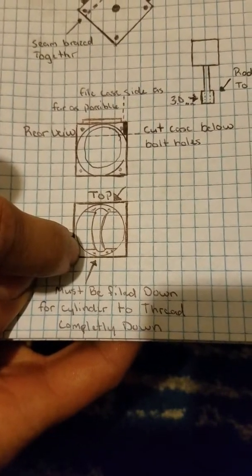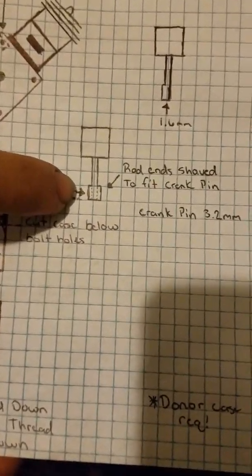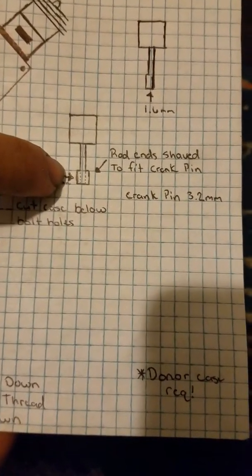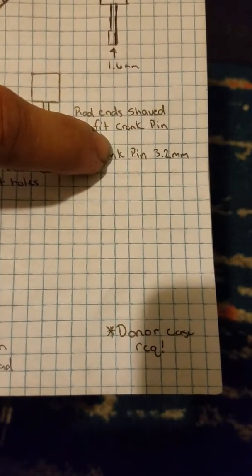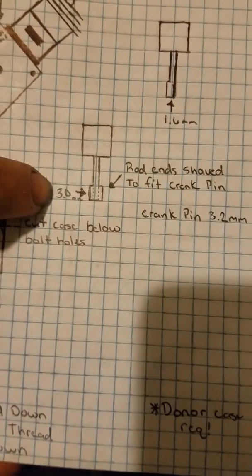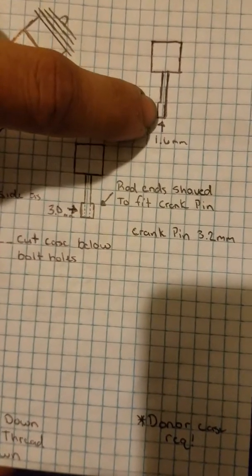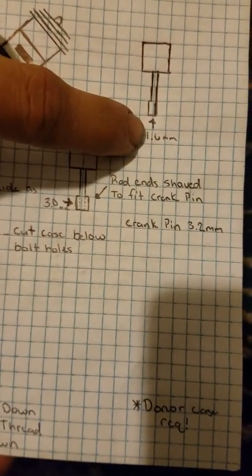Then your third problem is going to be getting this piston to fit on that little crank pin, because your crank pin is only 3.2 millimeters long and your piston rod end is 3 millimeters. So you're going to have to shave down one side of both rods down to 1.6 to get them to fit onto that crank pin.